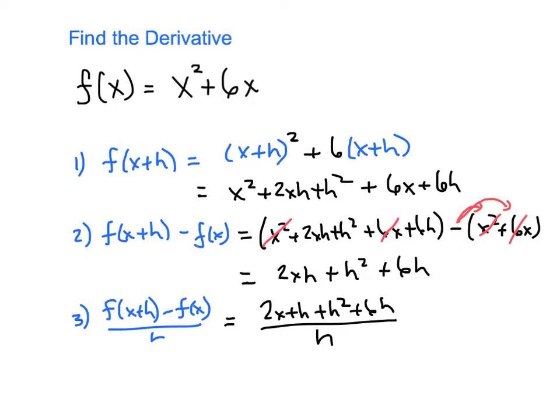When we divide, that's 2xh, that h is going to cancel with this guy. One of these h's is going to cancel and this h is going to cancel. And so for step 3 we end up with 2x plus h plus 6.